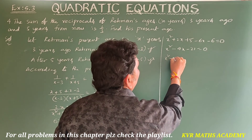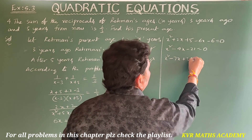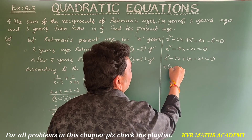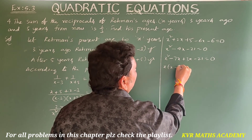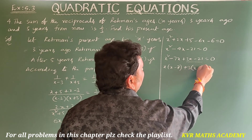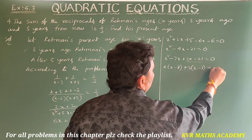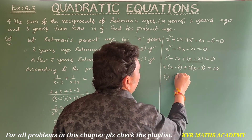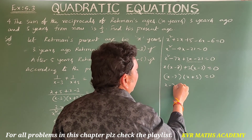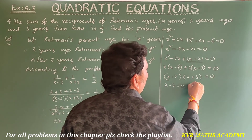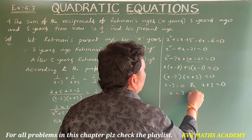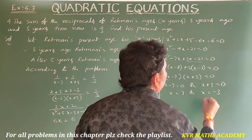Factorizing: x(x minus 7) plus 3(x minus 7) equals 0, so (x minus 7)(x plus 3) equals 0. Therefore x minus 7 equals 0 or x plus 3 equals 0, giving x equals 7 or x equals minus 3.